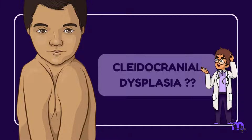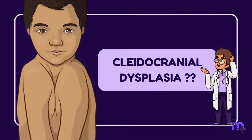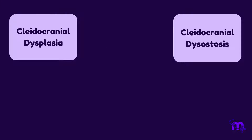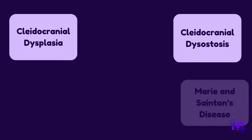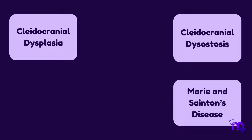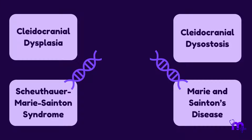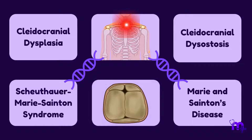So this video is all about cleidocranial dysplasia. Cleidocranial dysplasia, or cleidocranial dysostosis, also known as Marie-Sainton's Disease or Chitayat-Marie-Sainton's Syndrome, is a rare genetic condition that affects the development of bones, especially the clavicles and the cranium.